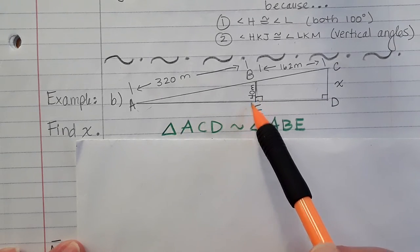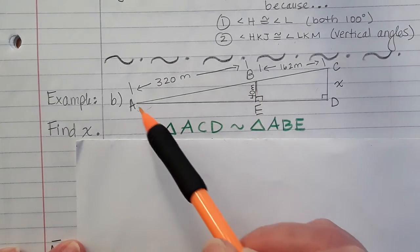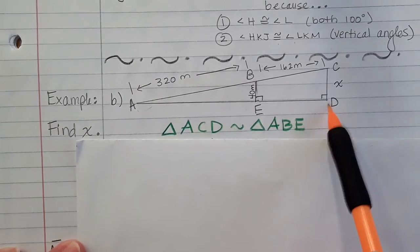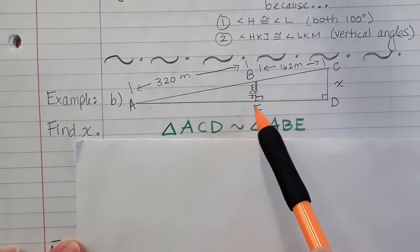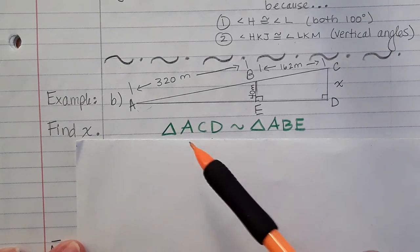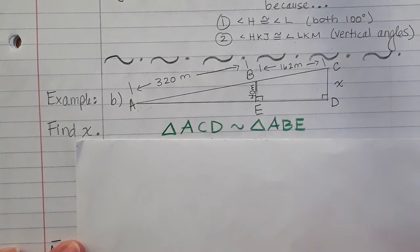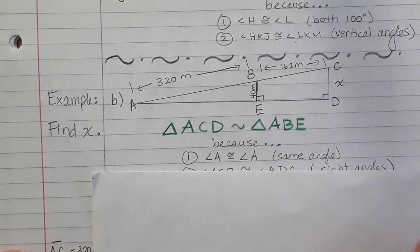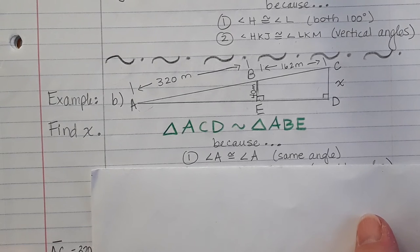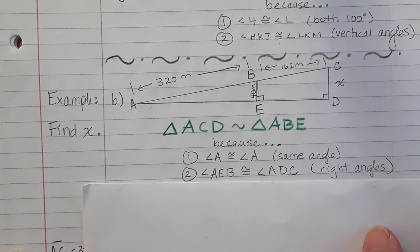And therefore, this angle here, angle AEB and angle ADC, these are both 90 degrees. So if two angles are congruent, the triangles are congruent. So same thing here. Angle A's are the same. And these angles here are right angles.